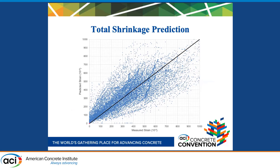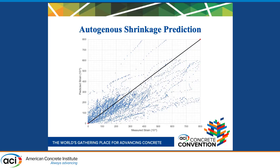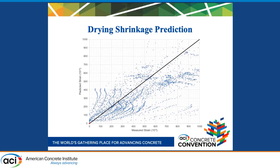After all parameters were fixed, the predicted and measured strains from the NU database were plotted on the same graph. A perfect prediction model would make all markers fall on the black line. In our case this is pretty good, but this plot is only for total shrinkage predictions. The second plot is for autogenous shrinkage predictions, and the third plot shows drying shrinkage predictions.